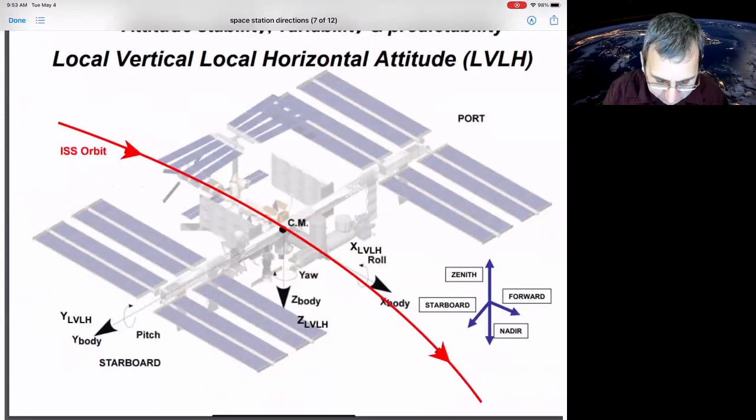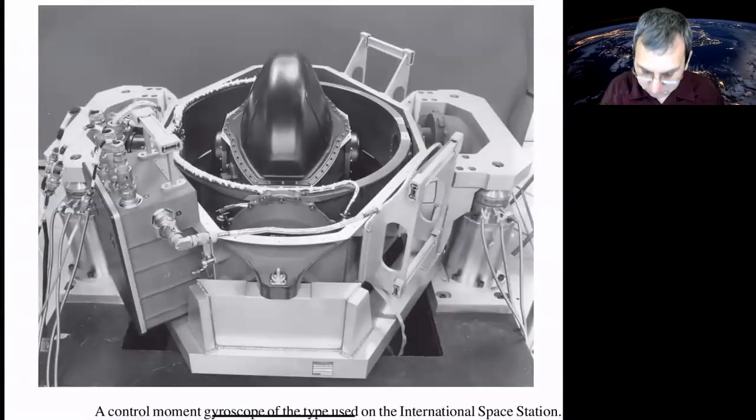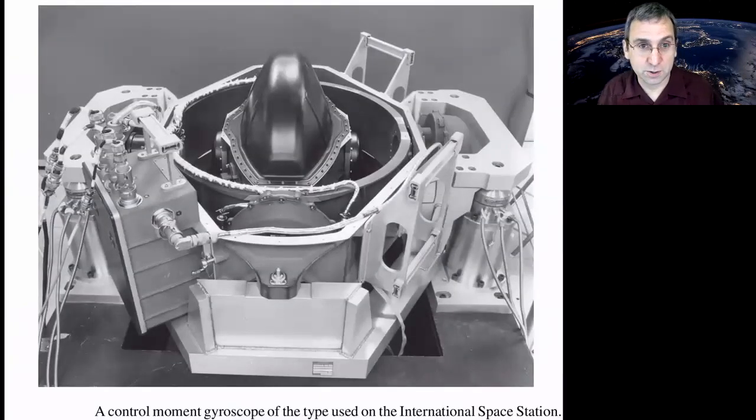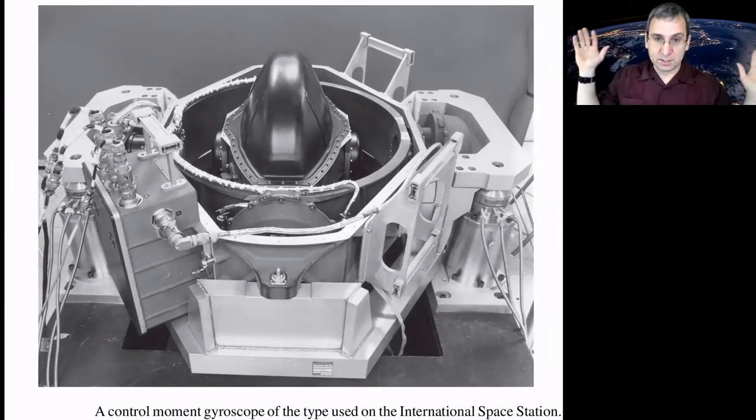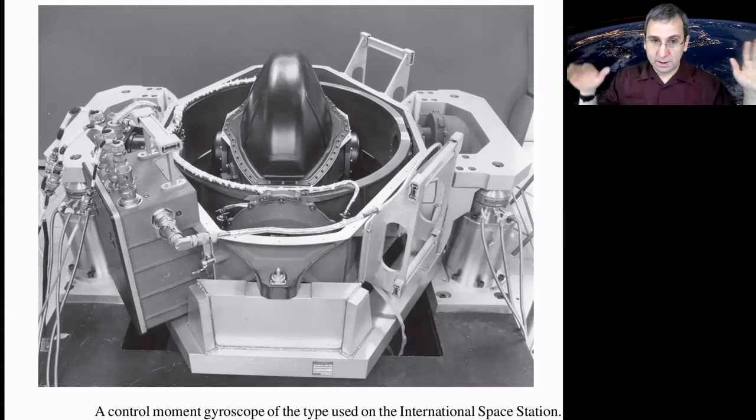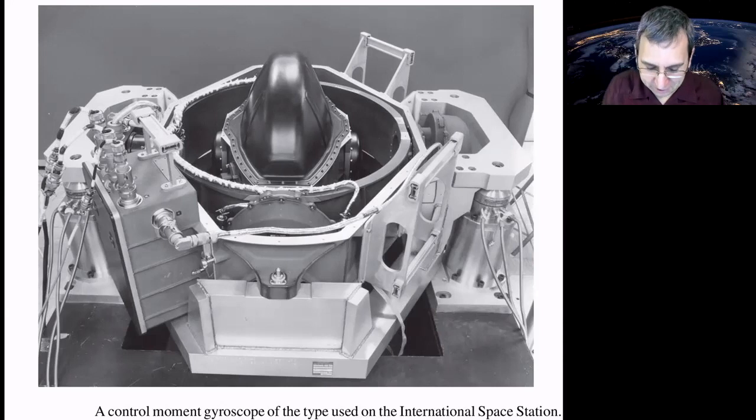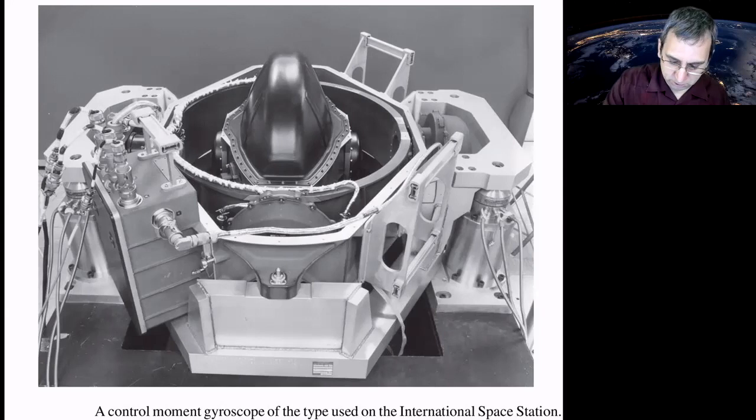And in the middle, they have a control moment gyroscope. It's pretty big. It controls for small changes in attitude as people are walking around or instruments move, or even as the solar panels deploy. Those lead to torques and you need to adjust for that. So there's a control moment gyroscope. I did want to give you some idea of how they work.